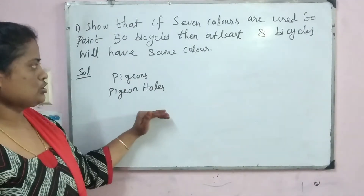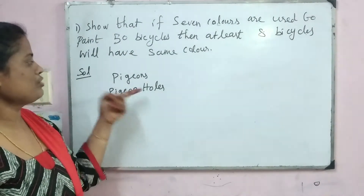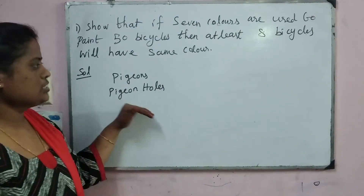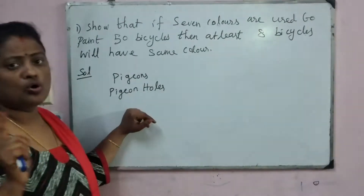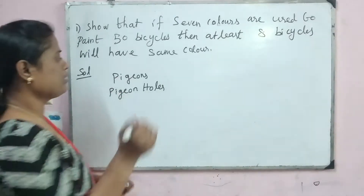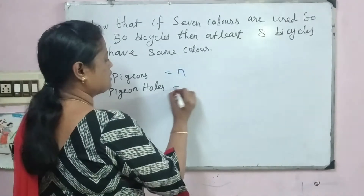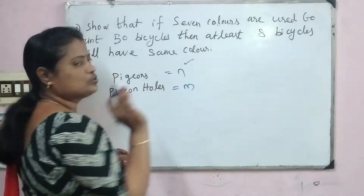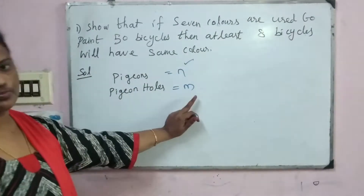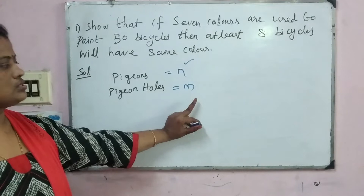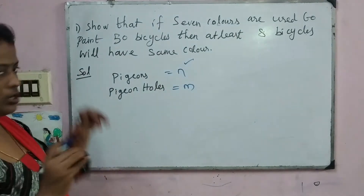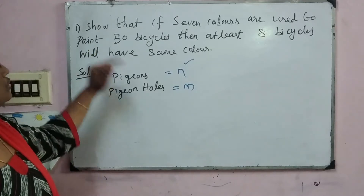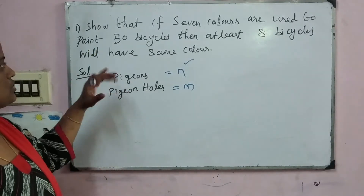Before going to this Pigeonhole Principle problem, let us identify which is the pigeon and which is the hole. Here is a tip: pigeons are denoted by N and holes are denoted by M. The key tip is that the value of N must be greater and M must be smaller.